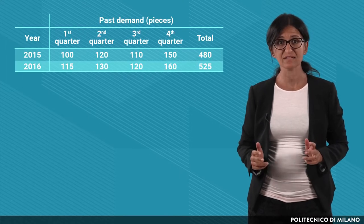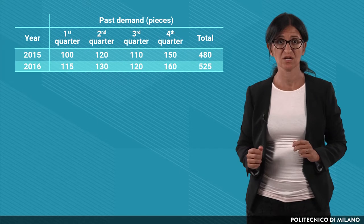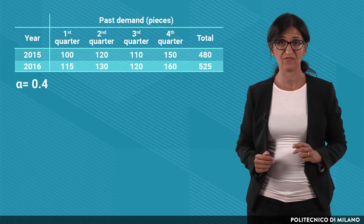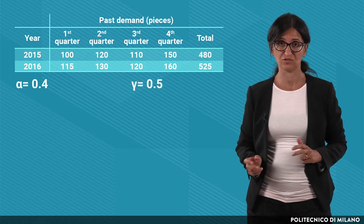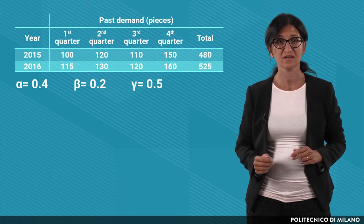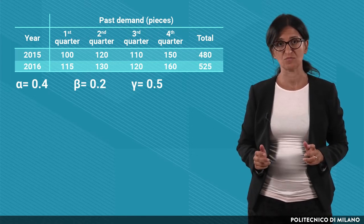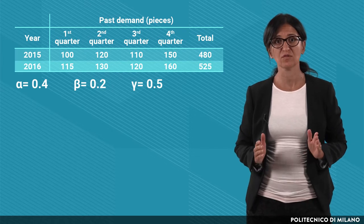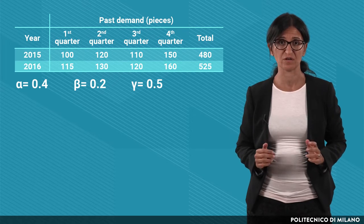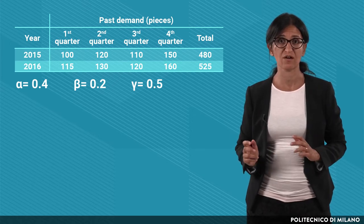Let's see an example. We can go on with the same example introduced in the previous lecture. We want to forecast the future demand by applying the Holt-Winters method using the following smoothing coefficients: alpha for the average is 0.4, gamma for the trend is 0.5, and beta for the seasonality is 0.2. Assume that now we are at the end of the first quarter of 2017 and the actual demand in the first quarter was 125 pcs.